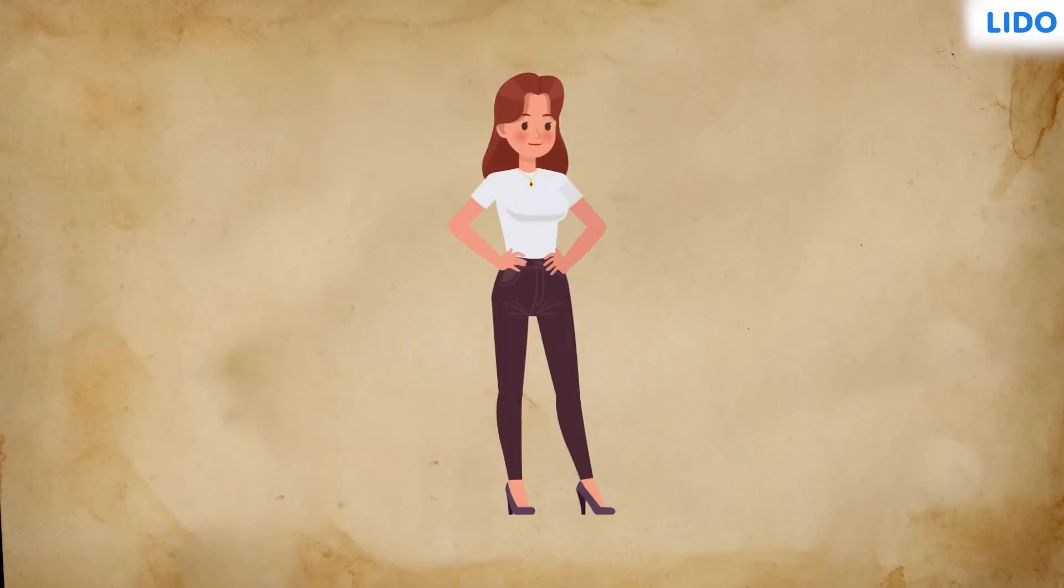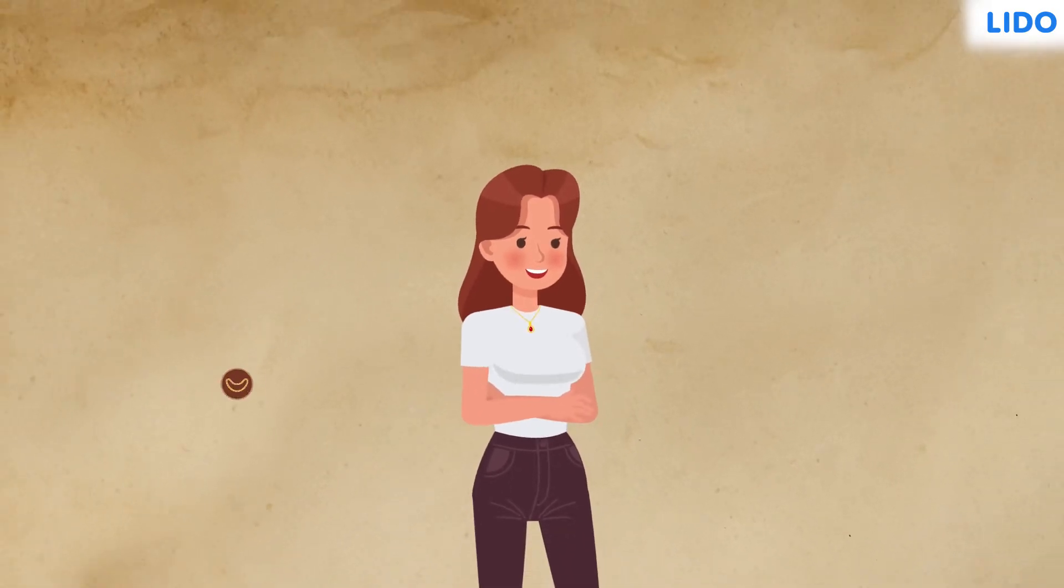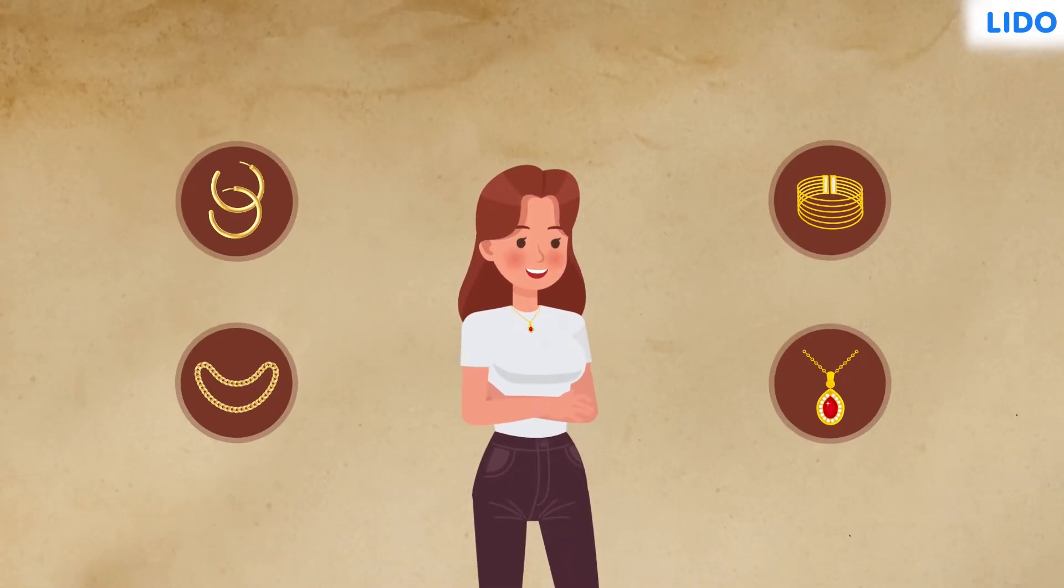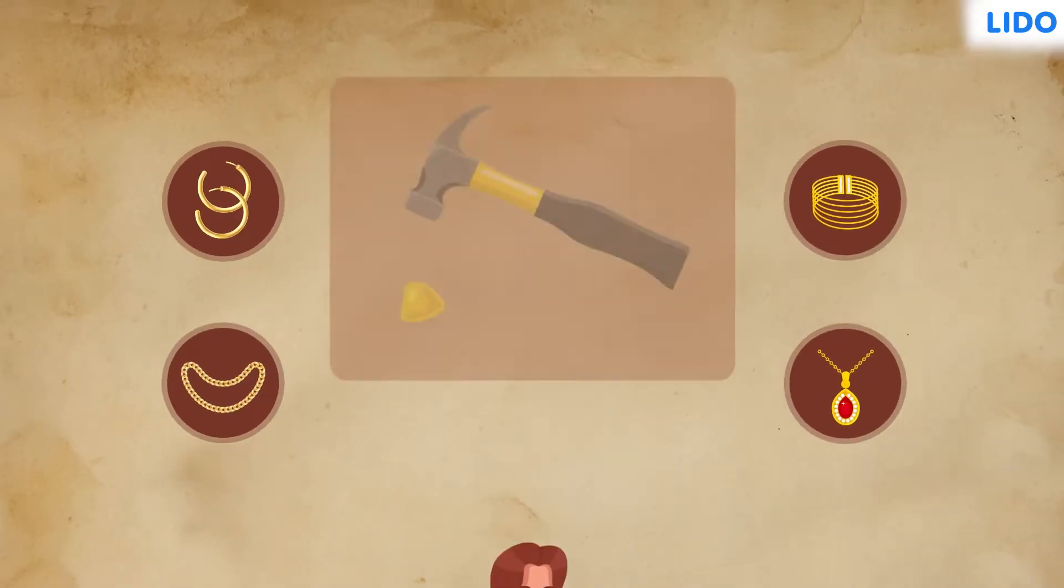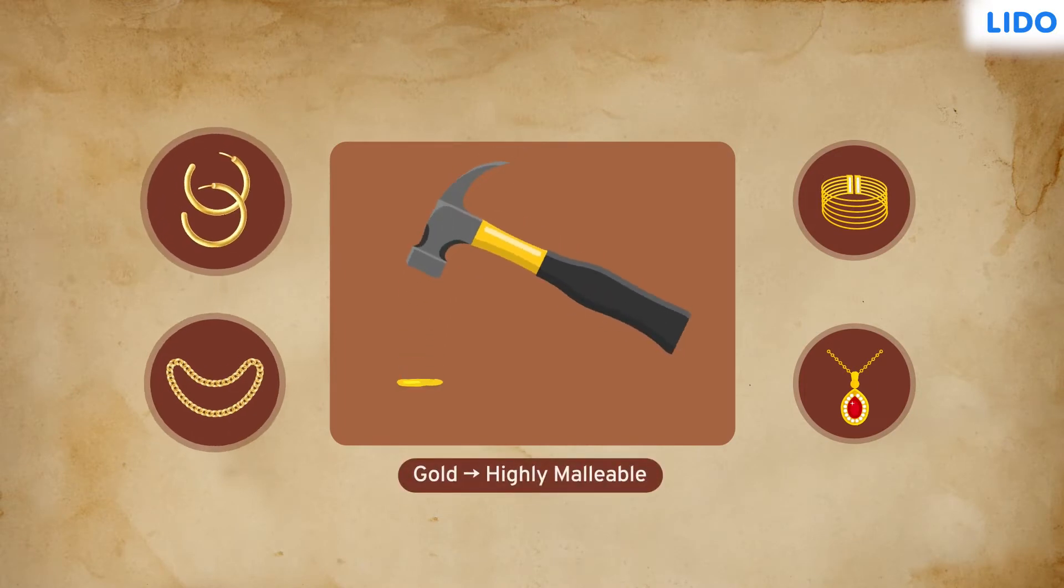Have you ever noticed how often jewellery is made of gold? Gold is one of the most widely used ornamental metals. This is because it is a highly malleable metal. It can take any shape.